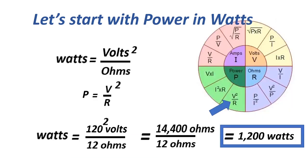The next power formula: watts equals volts squared over ohms, or P equals V squared over R, equals 120 squared over 12 ohms, equals 1,200 watts.